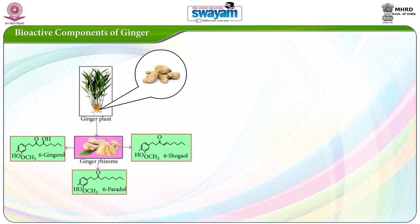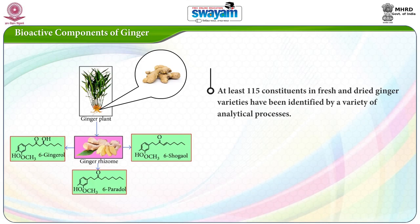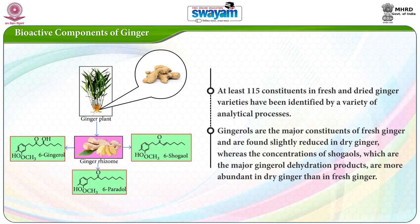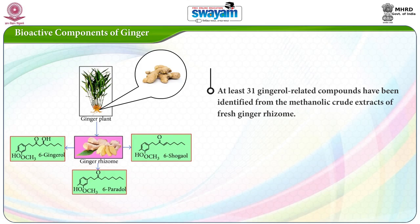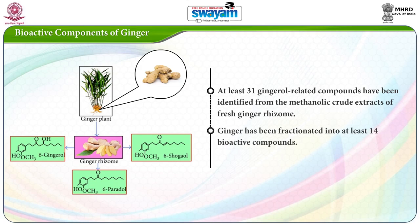Coming to the bioactive components of ginger: at least 115 constituents in fresh and dried ginger varieties have been identified by a variety of analytical processes. Gingerols are the major constituents of fresh ginger and are found slightly reduced in dry ginger, whereas the concentrations of shogaols, which are the major gingerol dehydration products, are more abundant in dry ginger than in fresh ginger. At least 31 gingerols have been identified from methanolic crude extracts of fresh ginger rhizome, and ginger has been fractionated into at least 14 bioactive compounds.